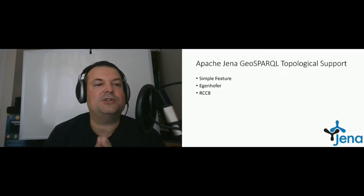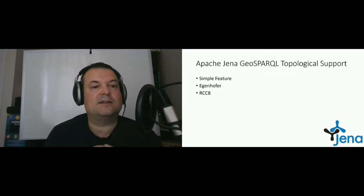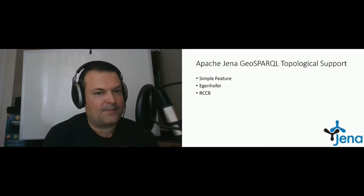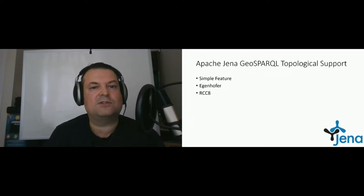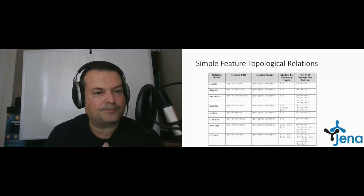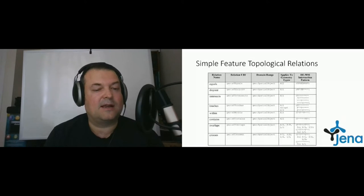For the Simple Feature family, we have the relationship equals — two features are equal — and a vocabulary URI specified in the GeoSPARQL standard. The domain and range for that is a spatial object, and the standard also gives the intersection matrix pattern for this relationship. We also have: disjoint, intersects, touches, within, contains, overlaps, and crosses. These are all relationships that can exist between two spatial features in the dataset.